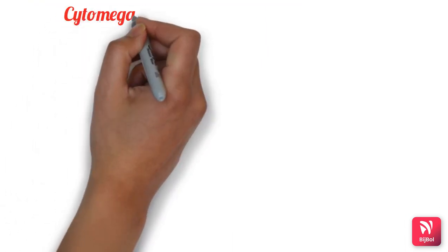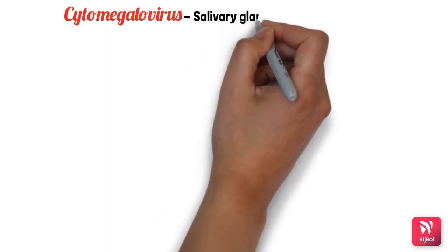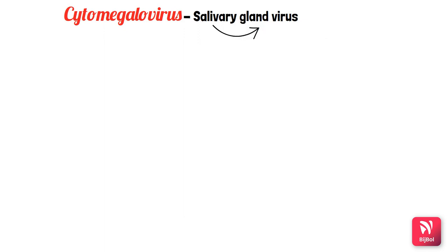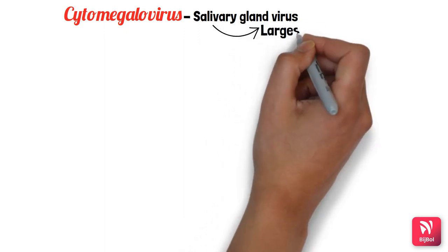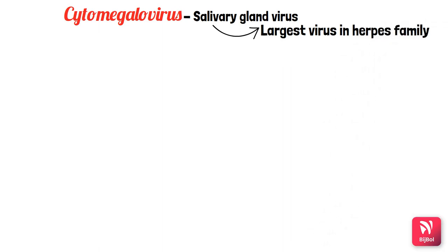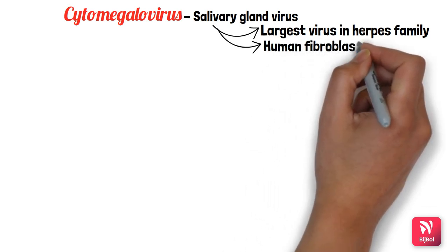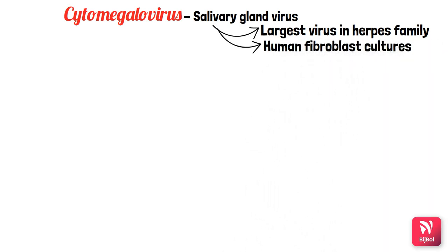Cytomegalovirus (CMV) is another type of human herpesvirus, previously called salivary gland virus. It is the largest virus in the herpesvirus family and is grown on human diploid fibroblast cultures like other herpesviruses.